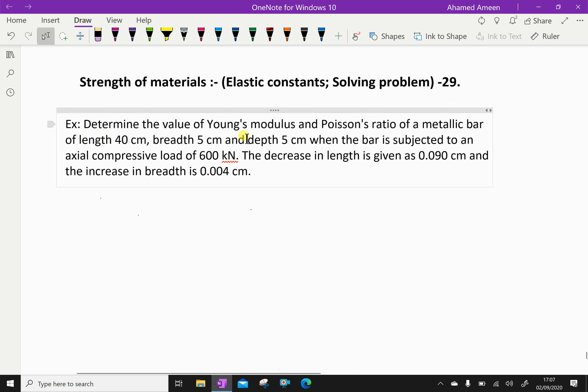Determine the value of Young's modulus and Poisson's ratio of a metallic bar of length 40 cm, breadth 5 cm and depth 5 cm when the bar is subjected to an axial compressive load of 600 kN. The decrease in length is given as 0.090 cm and the increase in breadth is 0.004 cm.